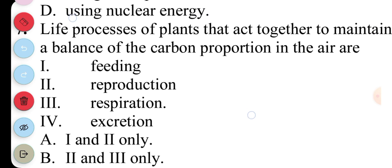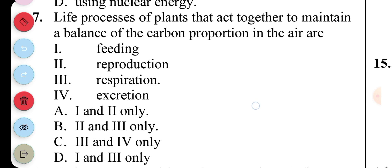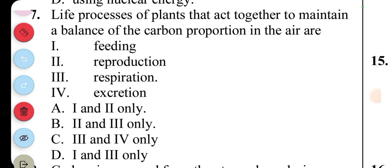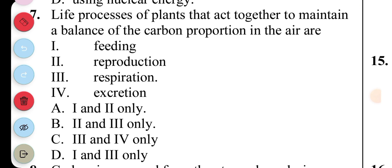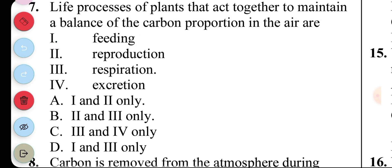Question 7. Life processes of plants that act together to maintain a balance of carbon proportion in the air are A. feeding, B. reproduction, C. respiration, D. excretion. The answer to question 7 is A and C.